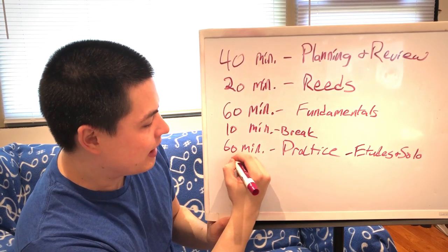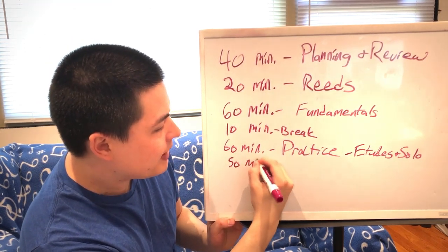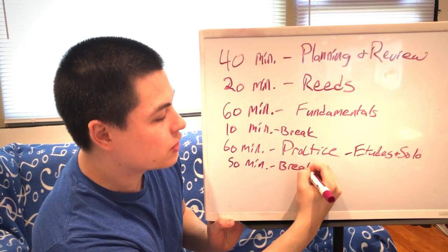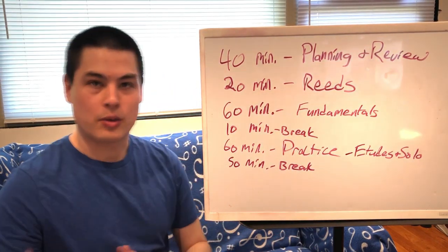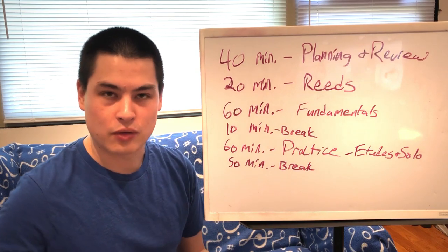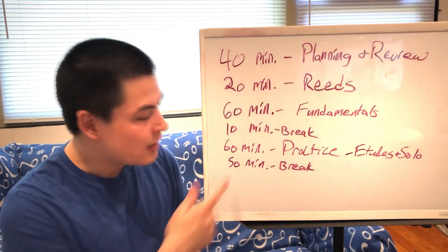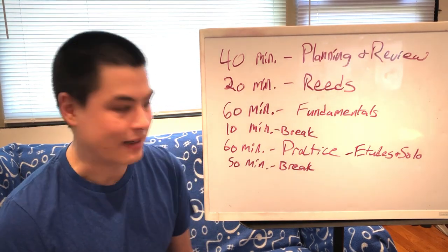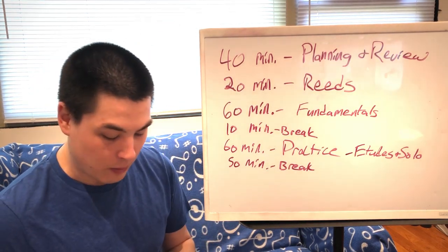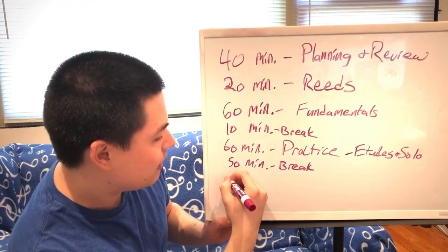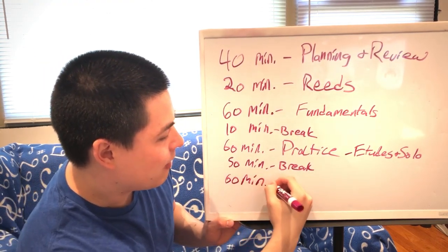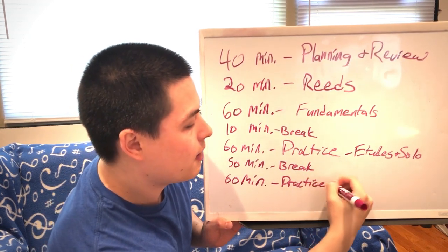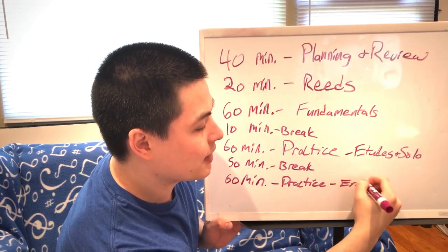And then after that, we get a longer break. This is part of the Pomodoro technique as well, where you alternate short breaks, long breaks, short breaks, long breaks. And that gives our brain more time to refresh. This is a great time to eat a meal if it's lunchtime or dinnertime or whenever you're practicing. And then after that, we go back at it again with another 60 minutes of practice. This time is where I would work on my ensemble music.